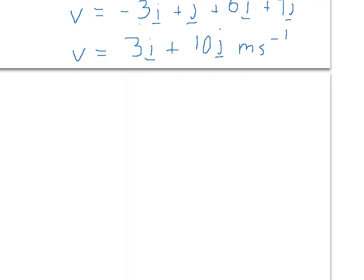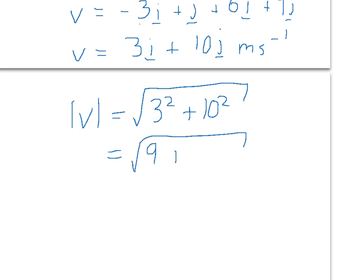what we do is to find the magnitude of the vector here. So the magnitude of v is equal to 3 squared plus 10 squared, which is 9 plus 100, which is the square root of 109, which if you do that on a calculator, the square root of 109 is 10.4 meters per second.